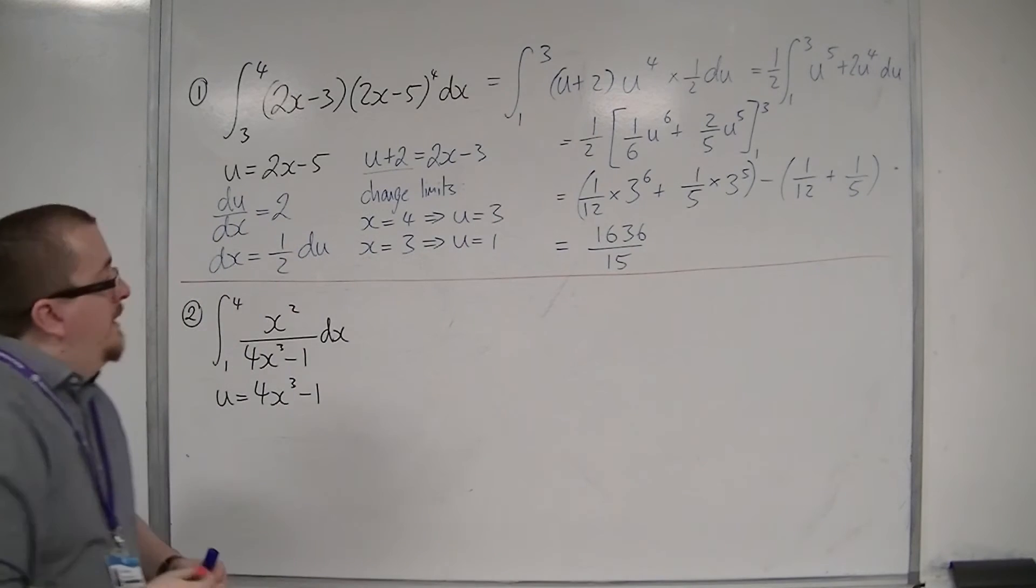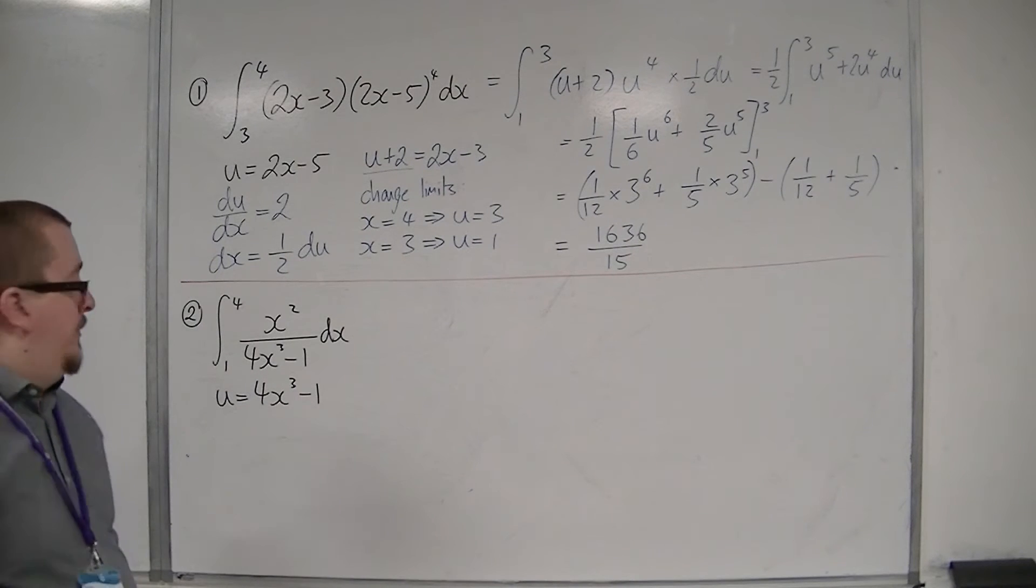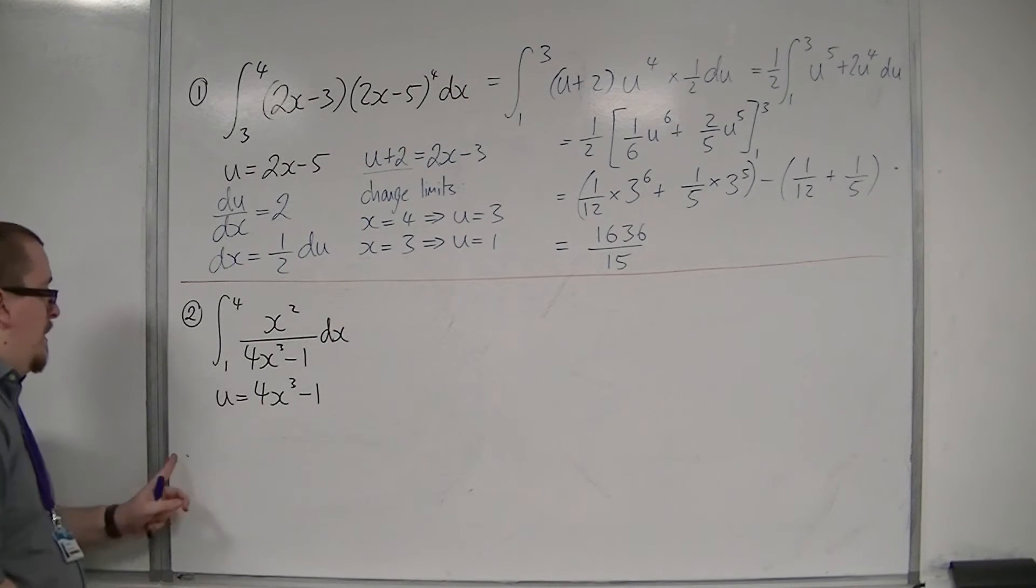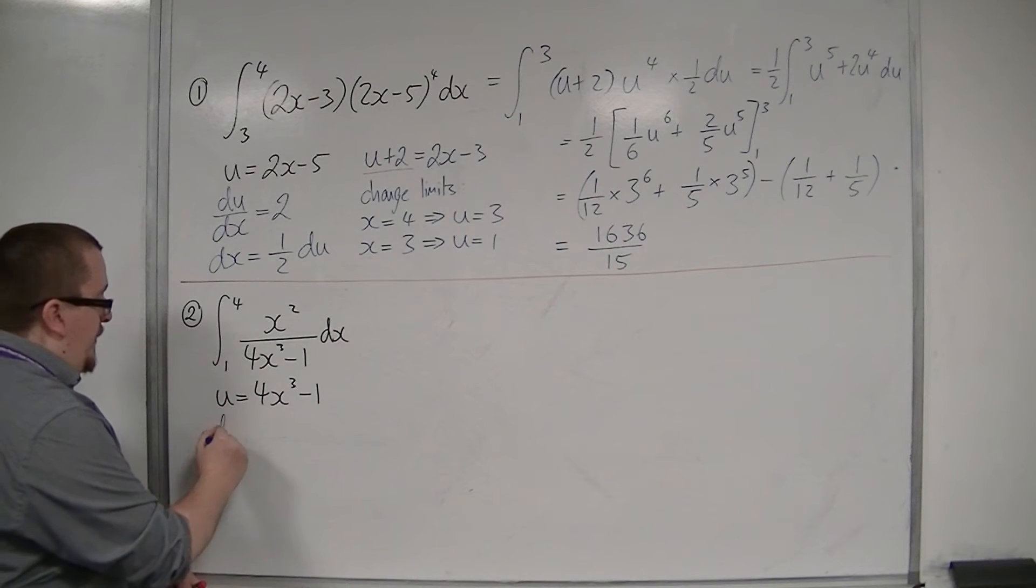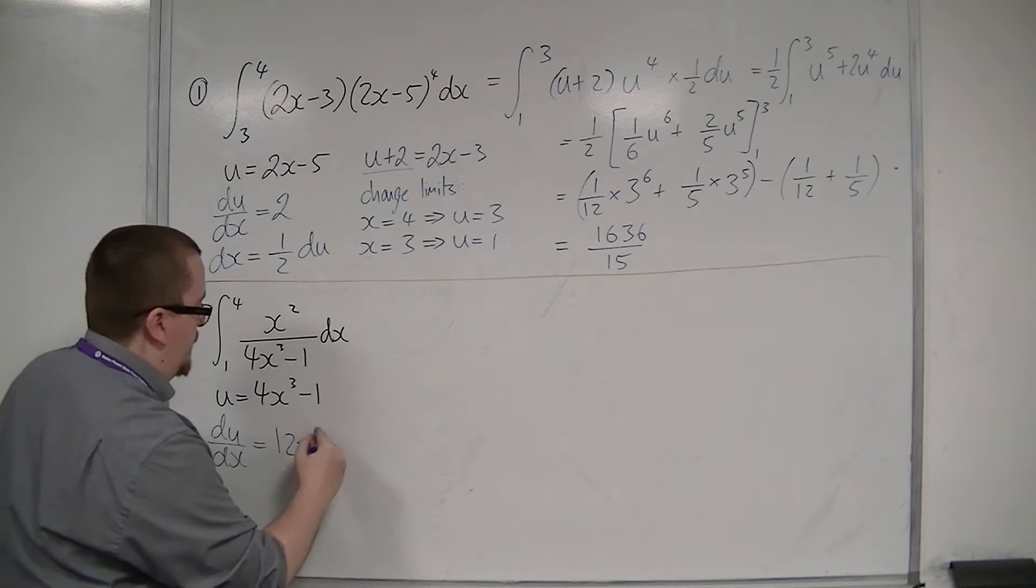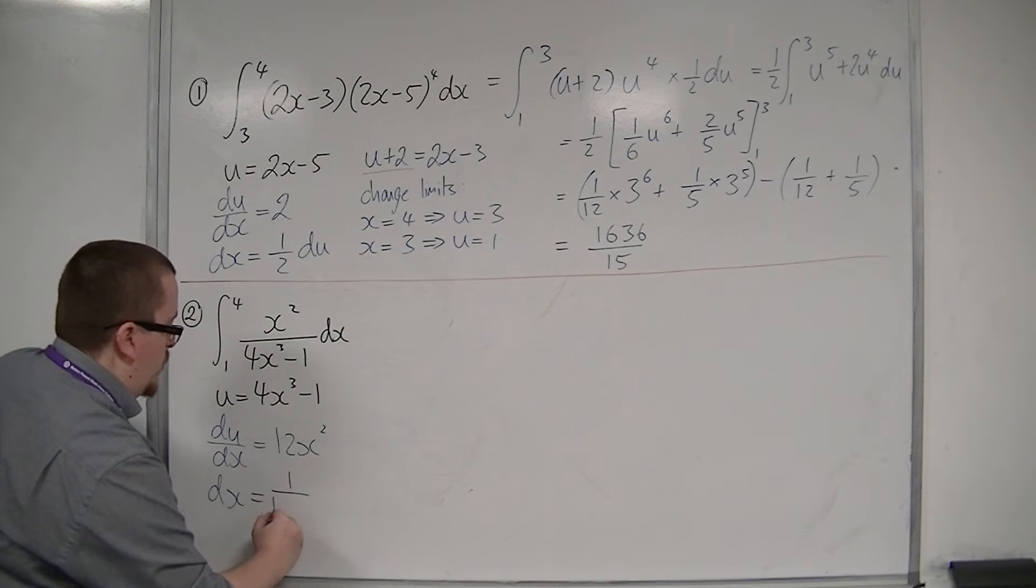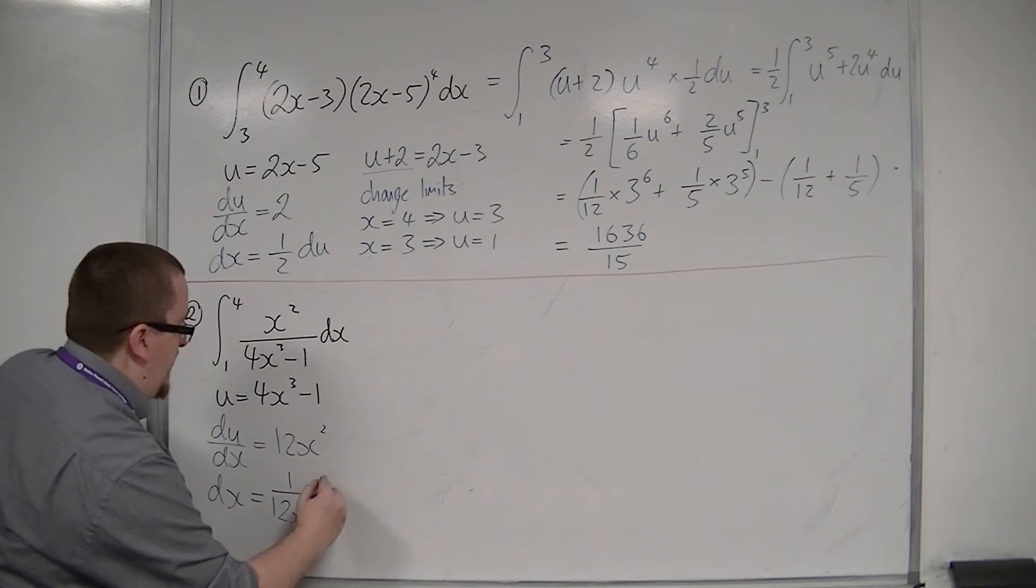Okay, so let's look at this second one. The integral between 1 and 4 of x squared over 4x cubed minus 1 dx, where u is 4x cubed minus 1. So find du by dx first, so that's 12x squared. So dx is 1 over 12x squared du.